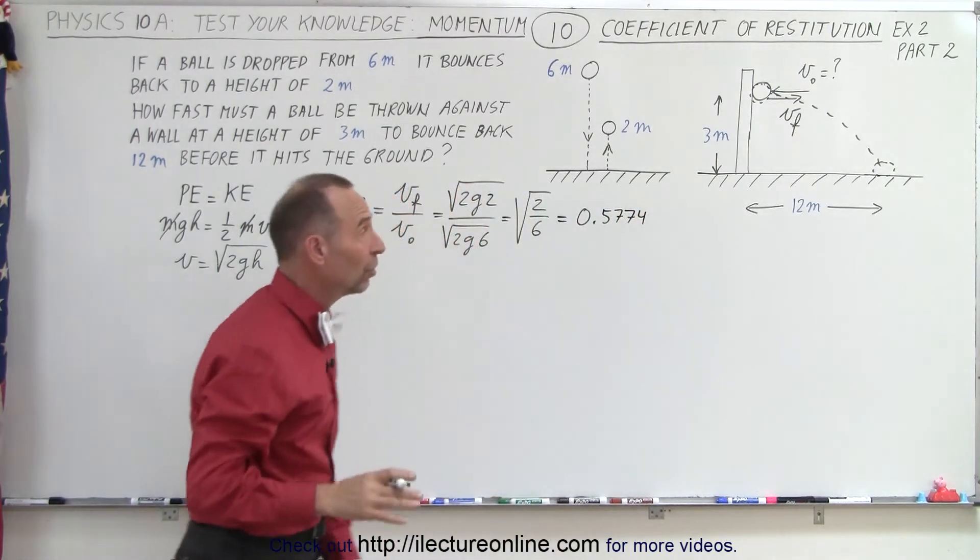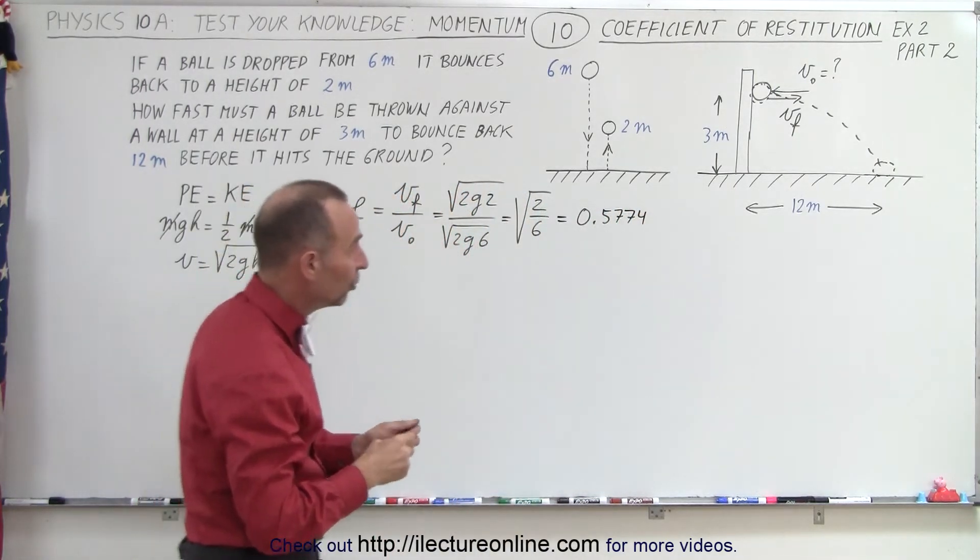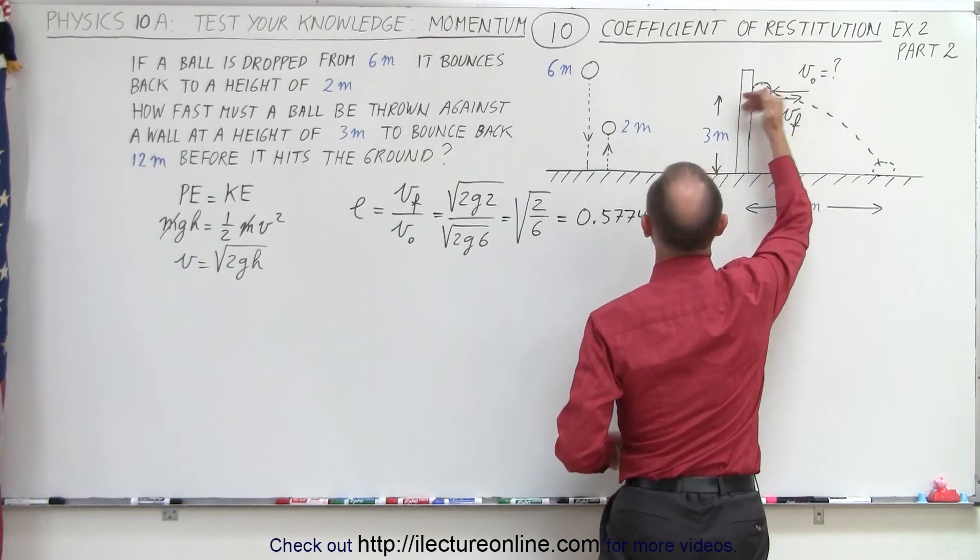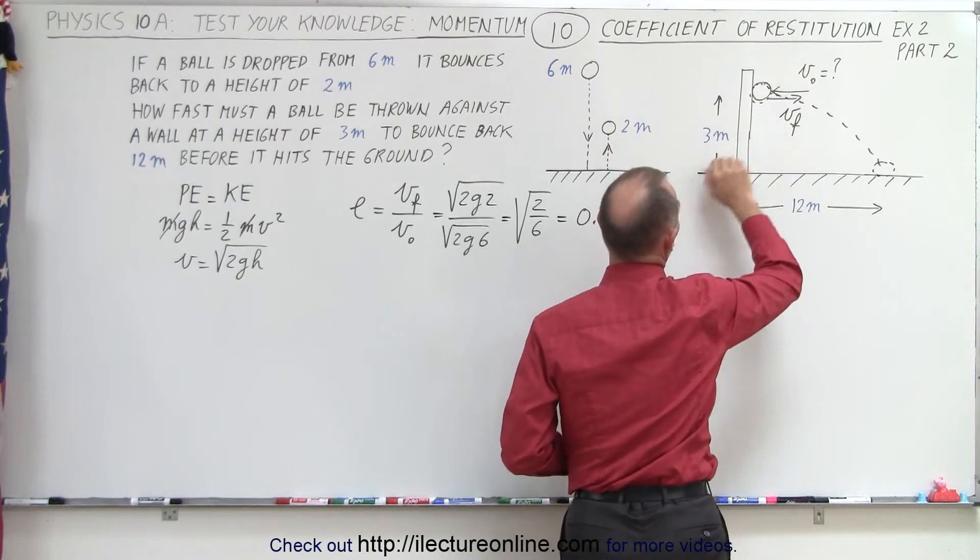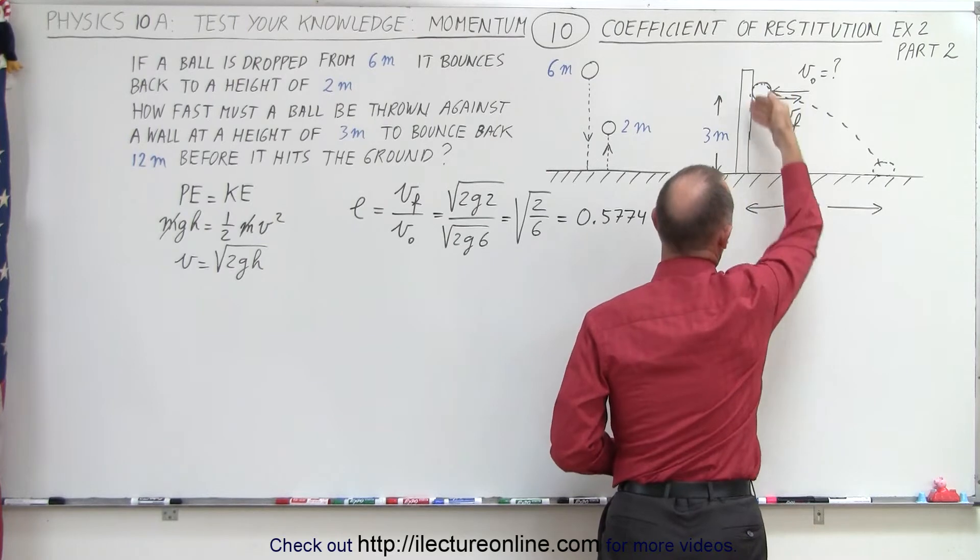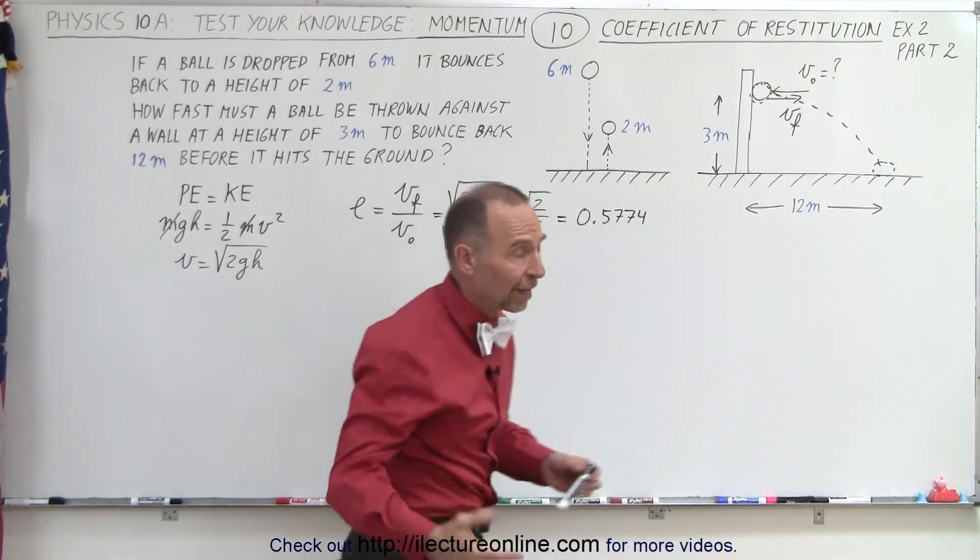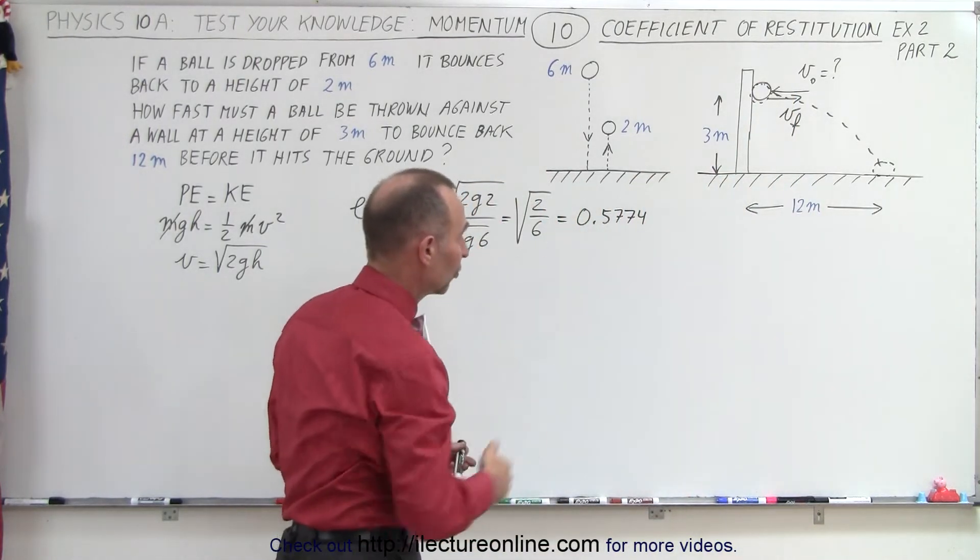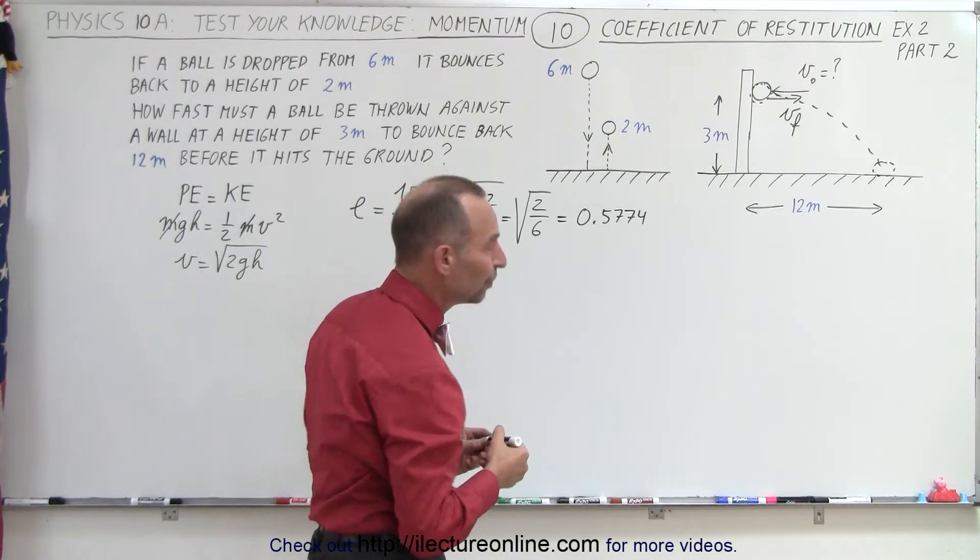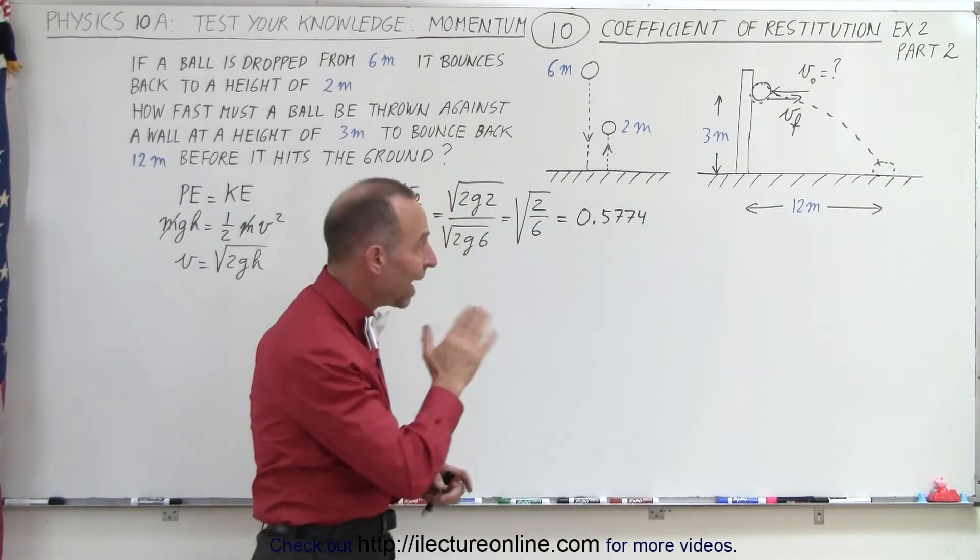The next thing we want to do is realize that what they want to know is how fast should the ball be thrown into a wall in a horizontal direction with the same coefficient of restitution, so that it will bounce back far enough 12 meters back before it drops down to the ground from a height of 3 meters. That's the height at which the ball is thrown against the wall, assuming the same coefficient of restitution, which means we need to find the time in the air.